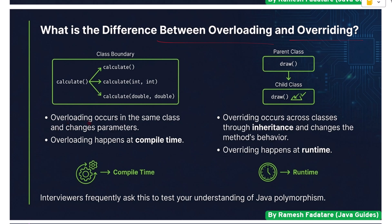What is the difference between overloading and overriding? Overloading occurs in the same class and changes parameters; overriding occurs across classes through inheritance and changes the method's behavior. Overloading happens at compile time; overriding happens at runtime. Interviewers frequently ask this to test your understanding of Java polymorphism.